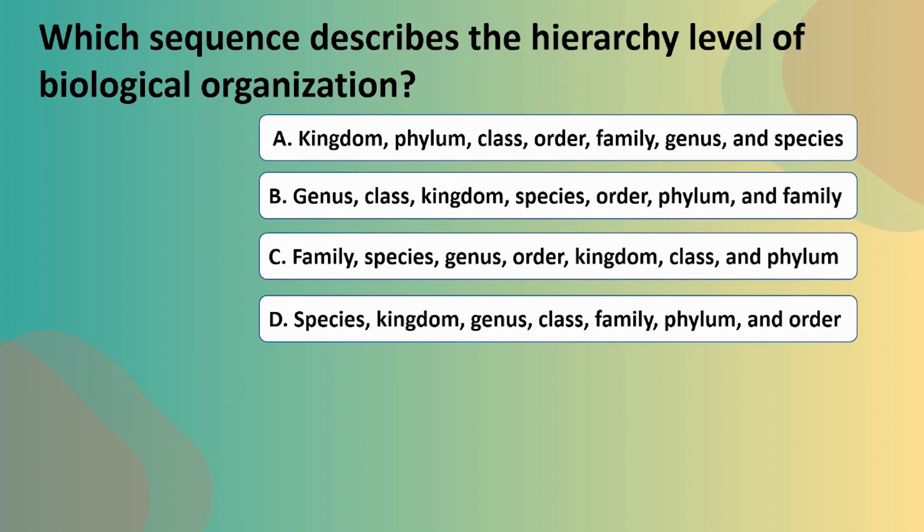C: Family, species, genus, order, kingdom, class, and phylum. Or D: Species, kingdom, genus, class, family, phylum, and order.